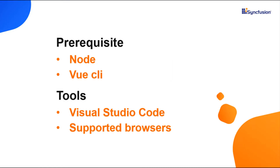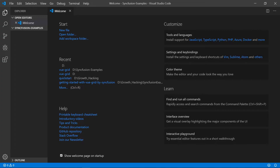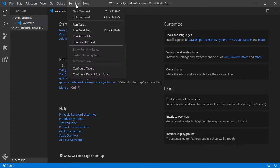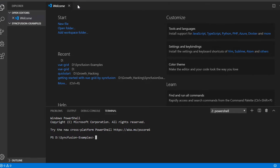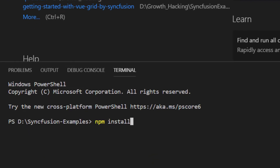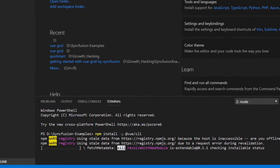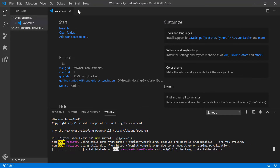Now let me start with the application creation process. As a first step, I need to set up a Vue environment on my machine and for that I need to install the Vue CLI package. In the meantime, make sure that you have installed the latest Node version in your system. Now I will open the Visual Studio Code and then open a new terminal window and type the command npm install vue CLI and press enter. This command will install all the required Vue package globally in my machine.